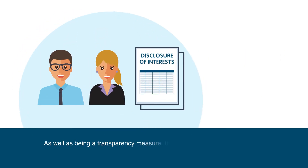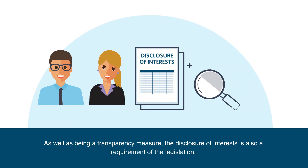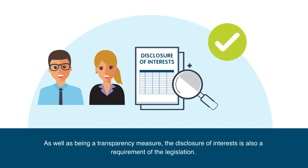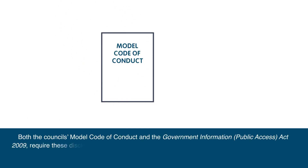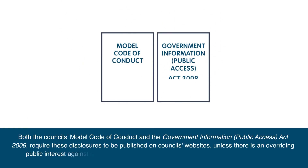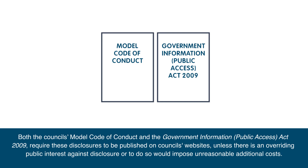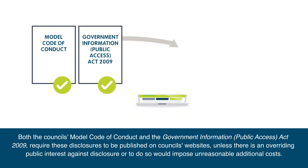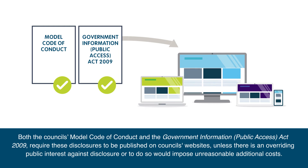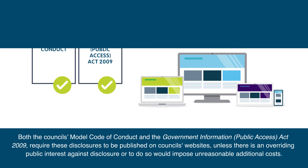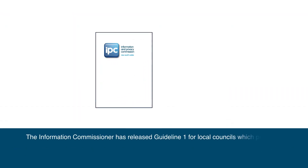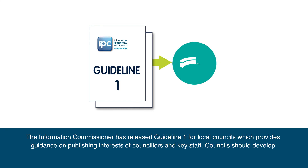As well as being a transparency measure, the disclosure of interest is also a requirement of the legislation. Both the Council's Model Code of Conduct and the Government Information Public Access Act 2009 require these disclosures to be published on councils' websites, unless there is an overriding public interest against disclosure, or to do so would impose unreasonable additional costs.